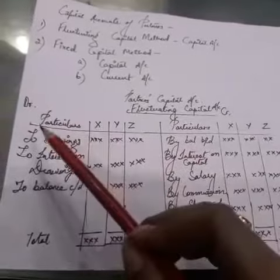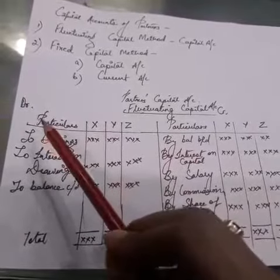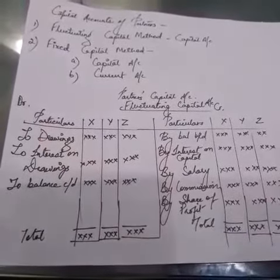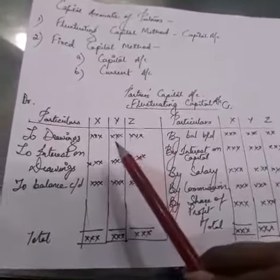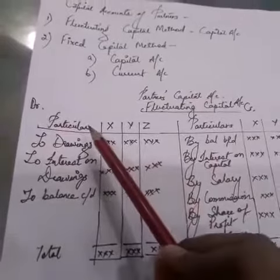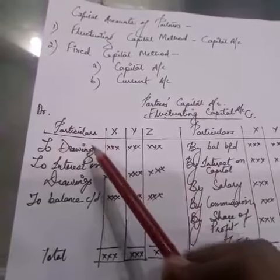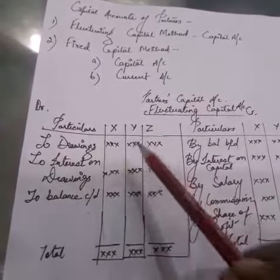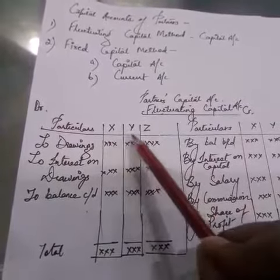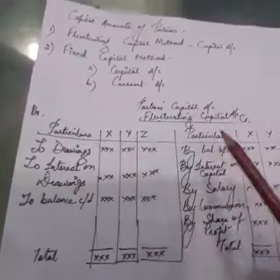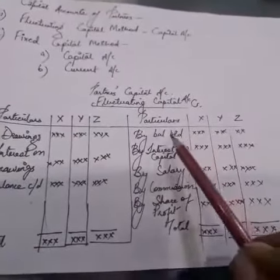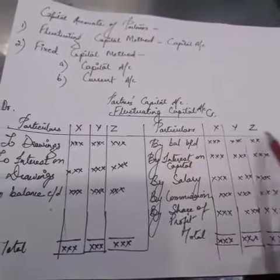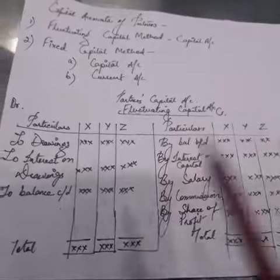As you can see here, I have made two sides — the debit side and the credit side. On the debit side, you have to make a column for particulars and then the names of the different partners. The same layout goes on the credit side: particulars and then the names of the partners.